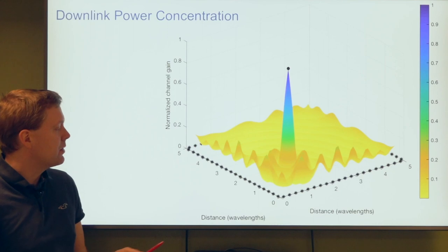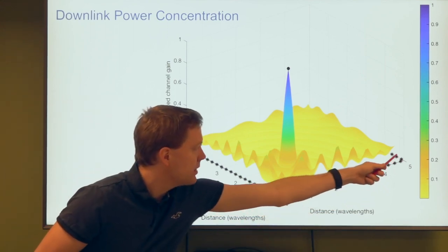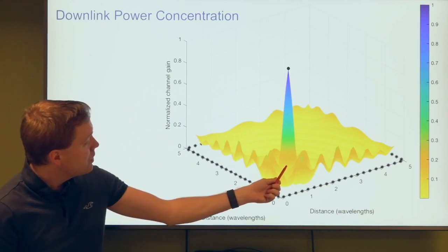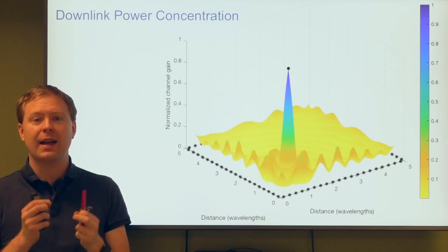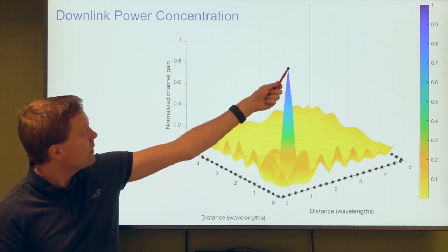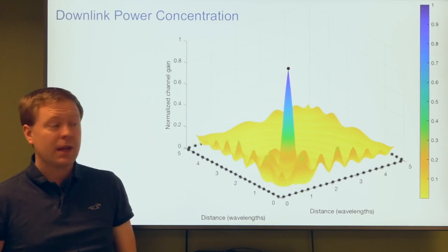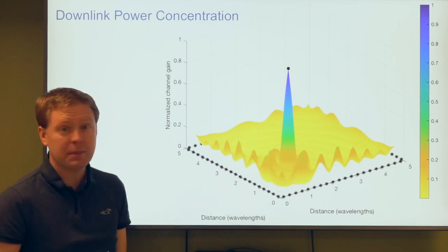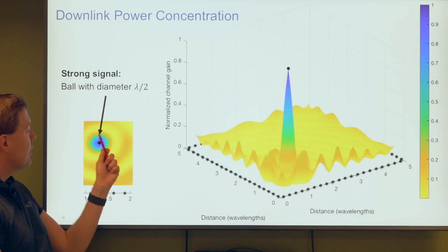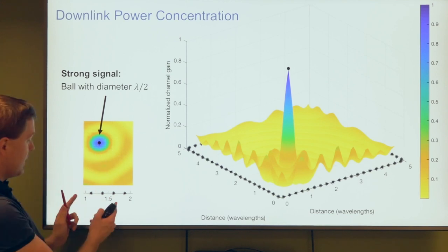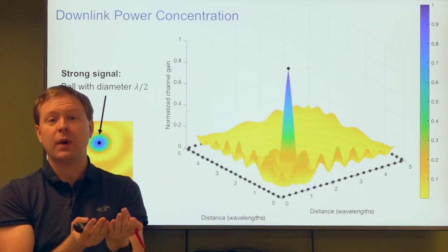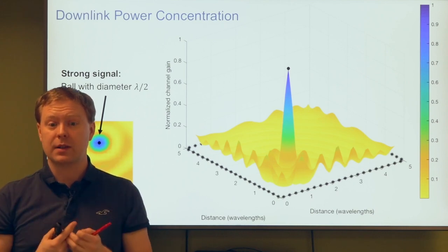Here is an example of how this works. A large number of access points are placed along the walls of a square room spanning 0 to 5 wavelengths. A user is at one location and the signals are phased to add constructively there. The color and height show signal strength. At the user's location the signal is very strong; almost everywhere else it is much weaker. Viewed from above, the signal is focused tightly on the user's location — roughly half a wavelength in diameter. In 3D this is like a ball of half a wavelength across with a strong signal, and weak signal everywhere else.